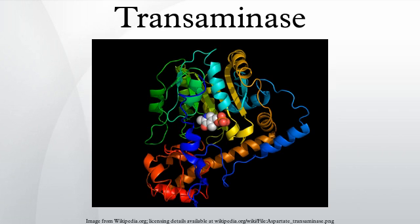In biochemistry, a transaminase or an aminotransferase is an enzyme that catalyzes a type of reaction between an amino acid and an alpha-keto acid. An amino acid contains an amino group. A ketoacid contains a keto group. In transamination, the NH2 group on one molecule is exchanged with the equals O group on the other molecule. The amino acid becomes a ketoacid, and the ketoacid becomes an amino acid.